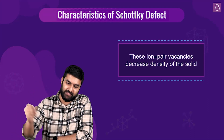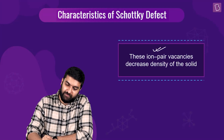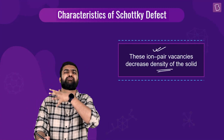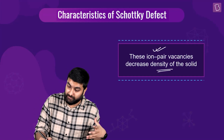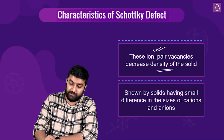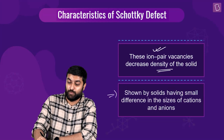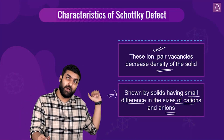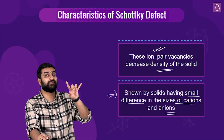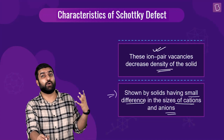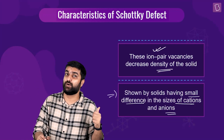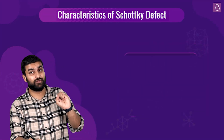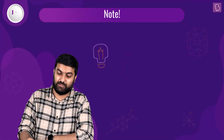These ion pair vacancies obviously decrease the density, because you're removing something. This is a vacancy version of the ionic solid. Furthermore, the Schottky defect is shown by solids which have a small difference in the sizes of cations and anions — in contrast to the Frenkel defect, which occurs when the size difference is large. Another exam question could be based on just that distinction.